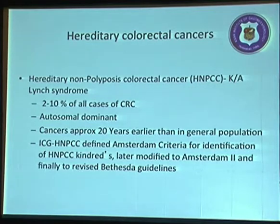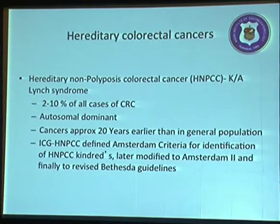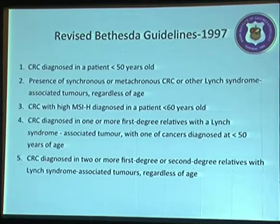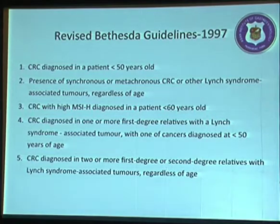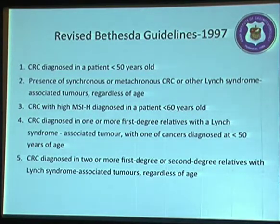The international collaborative group for HNPCC initially defined HNPCC according to Amsterdam criteria, which was later modified to Amsterdam II and finally to revised Bethesda guidelines. These revised Bethesda guidelines specify colorectal cancer in patients less than 50 years of age, synchronous or metachronous colorectal cancer, or microsatellite instability high in patients less than 60 years — these are the patients for whom mutational study analysis is recommended.